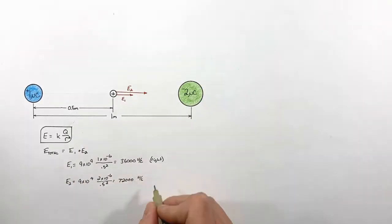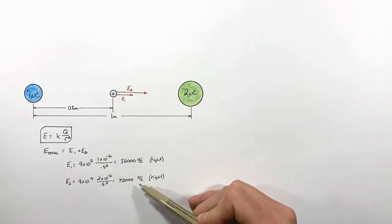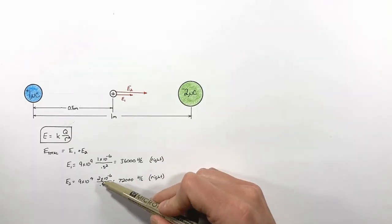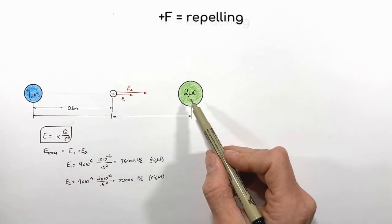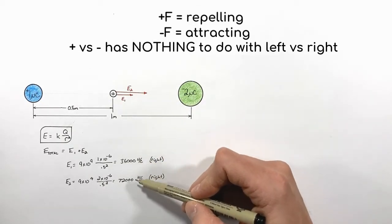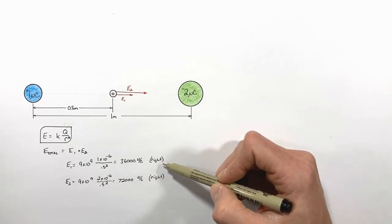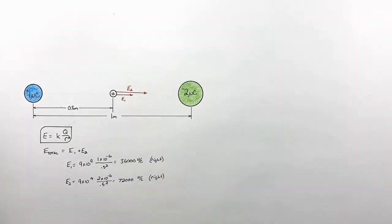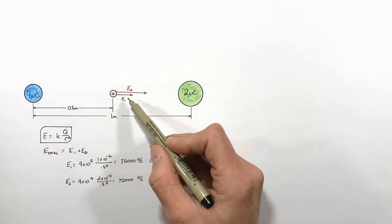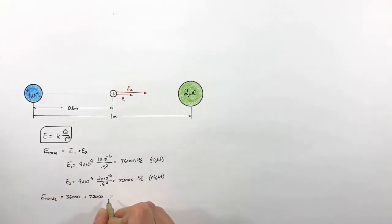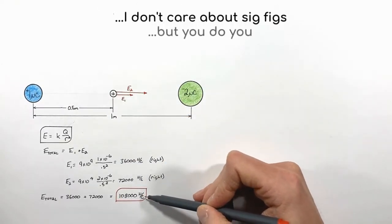Working out the electric field from the second charge, we find the electric field at this point from this negative two micro coulomb charge is 72,000 newtons per coulomb. Note that I didn't include the negative in my calculation — I prefer to leave the signs out of the calculations and determine directions conceptually instead, as putting negatives into the math can become confusing. The total electric field is the sum of the two electric fields, giving us 108,000 newtons per coulomb.